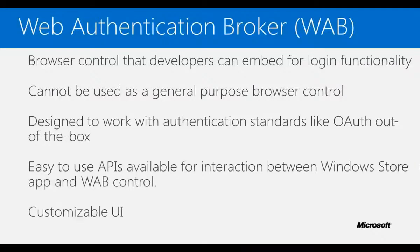Although Windows Azure Mobile Services can be used for authentication, it works only against a fixed set of identity providers as of today. We can also use other identity providers like Azure Access Control Services, and the recommended control to navigate to Access Control Service for authentication is Web Authentication Broker. Web Authentication Broker is a control that developers can embed for login functionality. It cannot be used as a general-purpose browser control; it is designed for login functionality in a way that keeps your cookies secure as well as clears them out of the box.